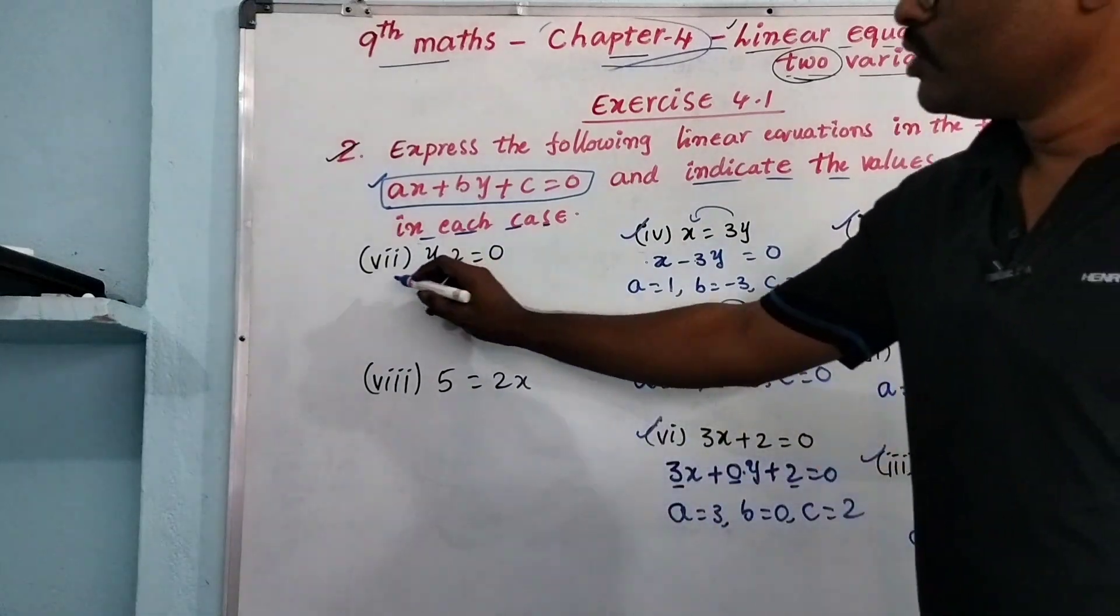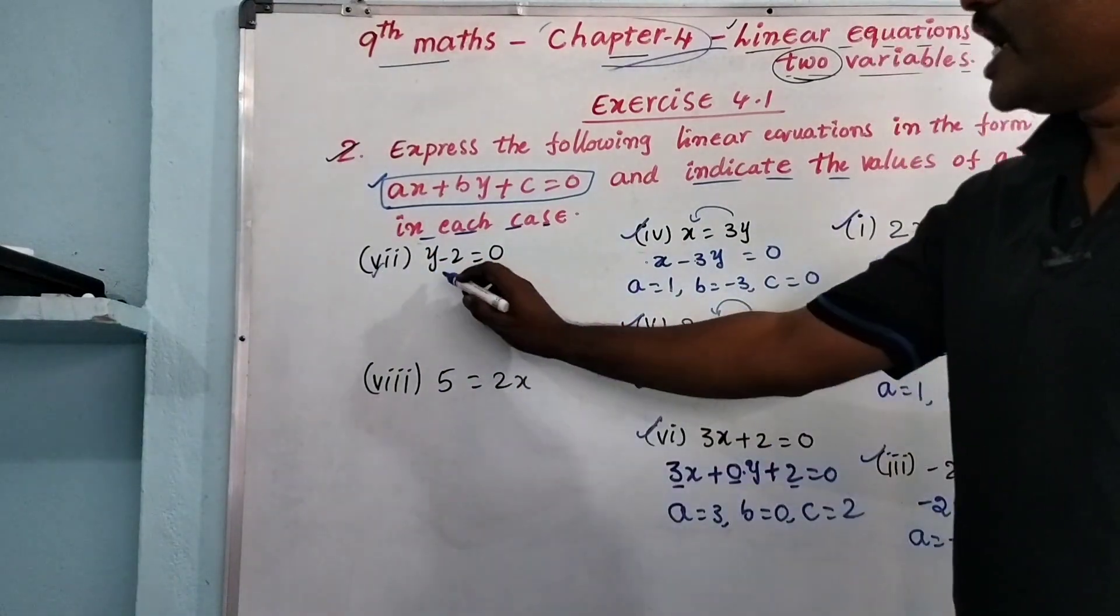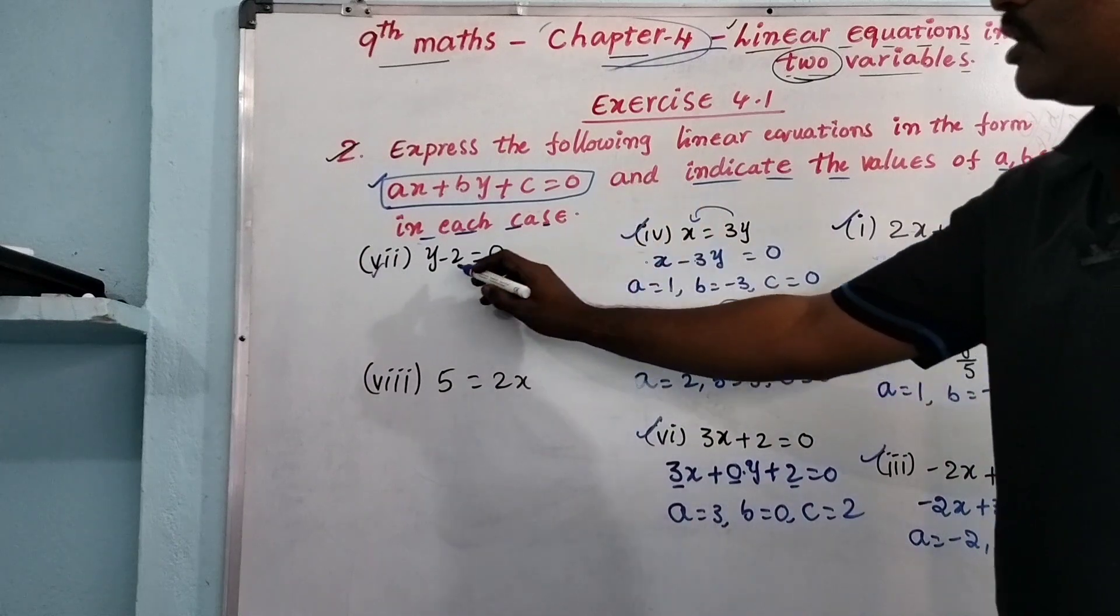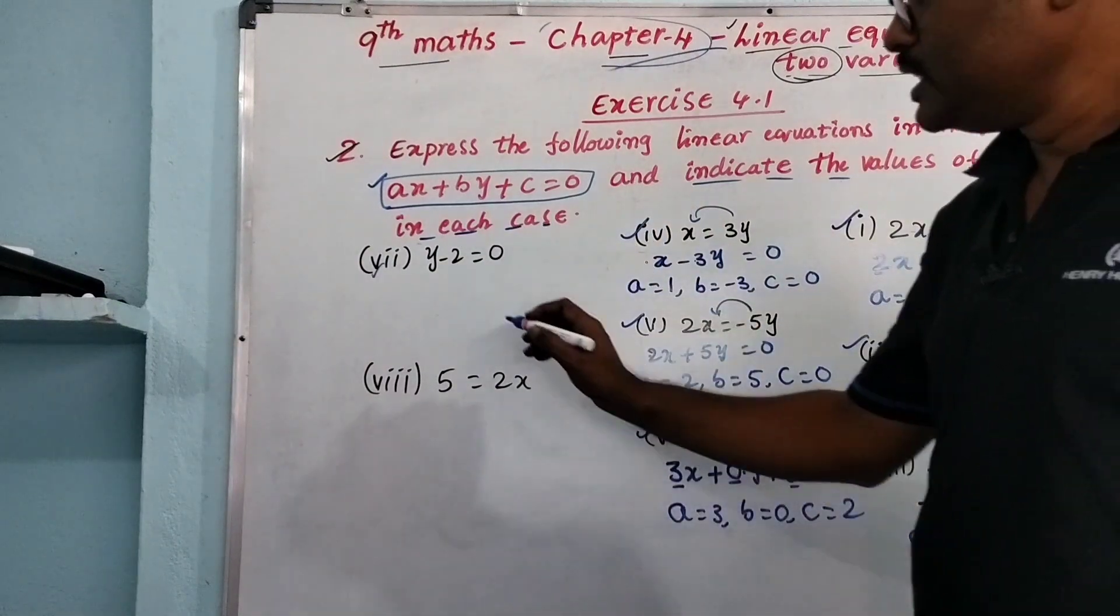Now let's see question number 7: y minus 2 = 0.